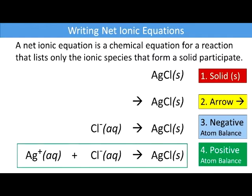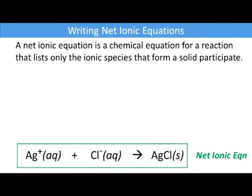Notice also that when we write each ionic species, we must make sure that it's balanced. In the case of silver chloride, we have one chloride and one silver — it's balanced. So this is the net ionic equation for the formation of silver chloride. Notice that we were able to do this without knowing the molecular compound.